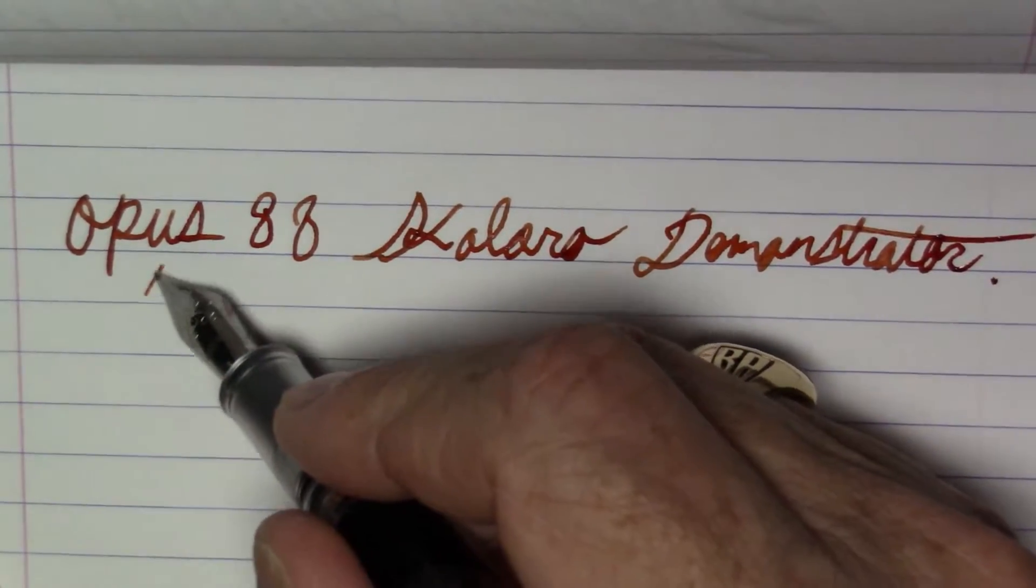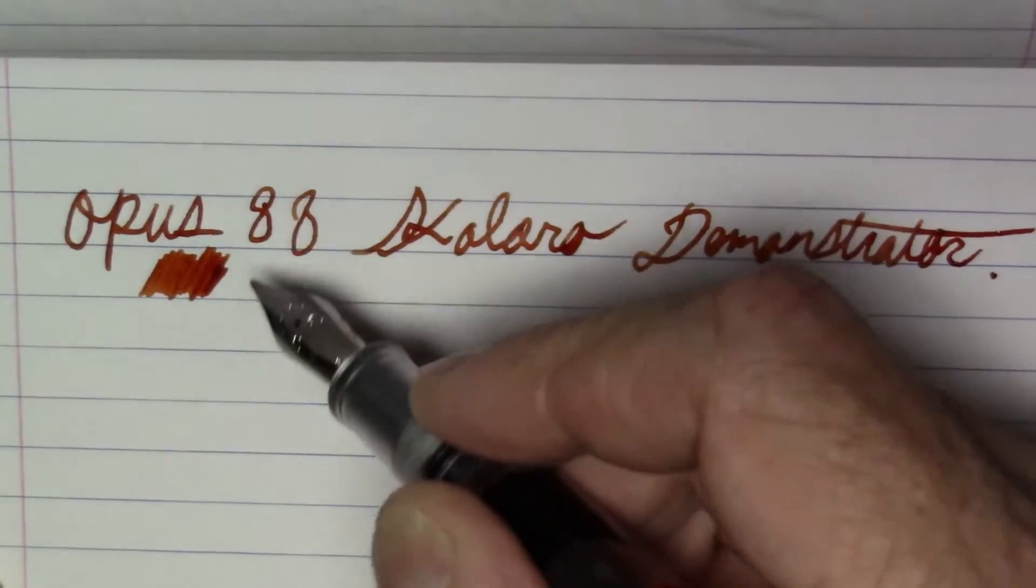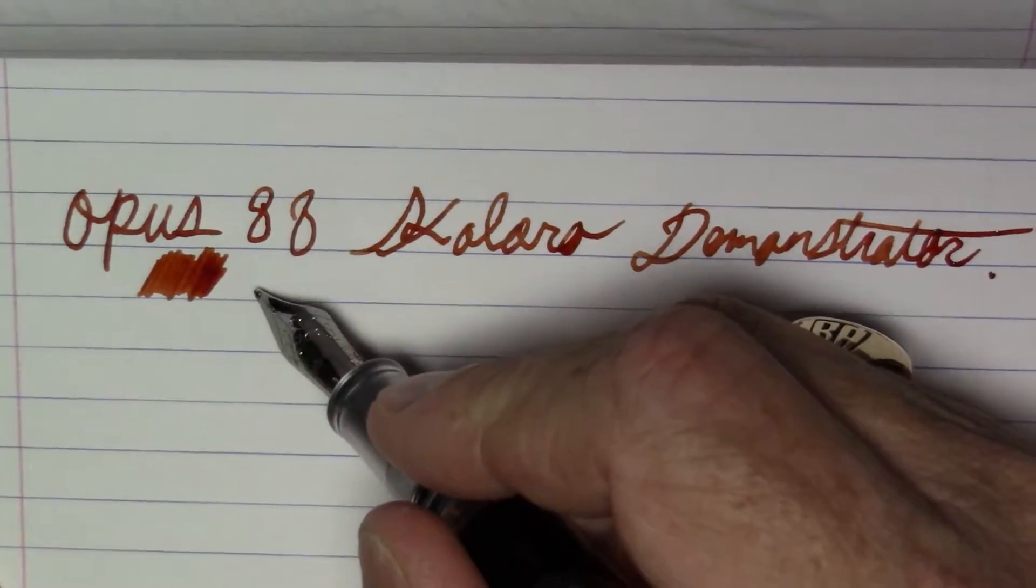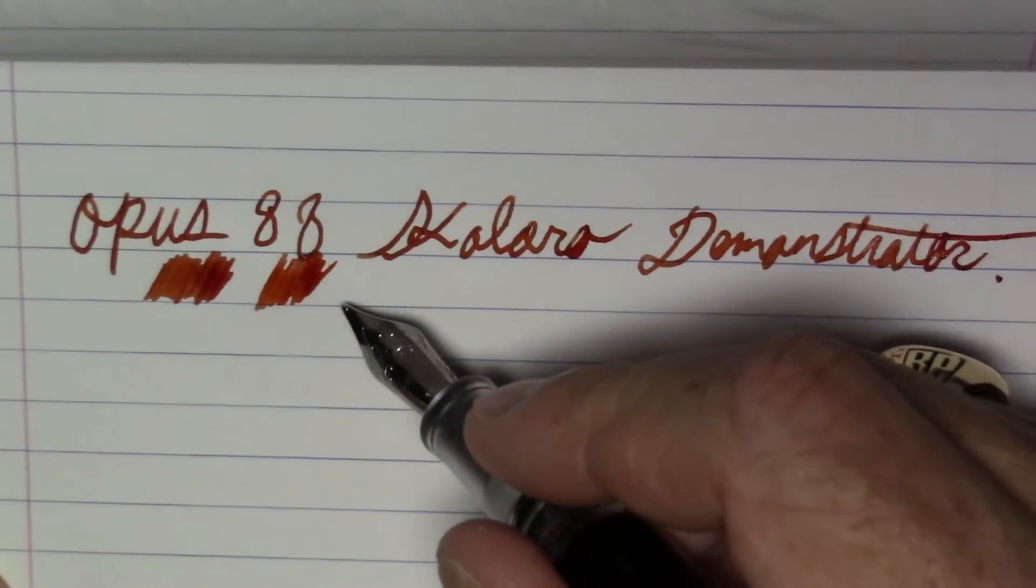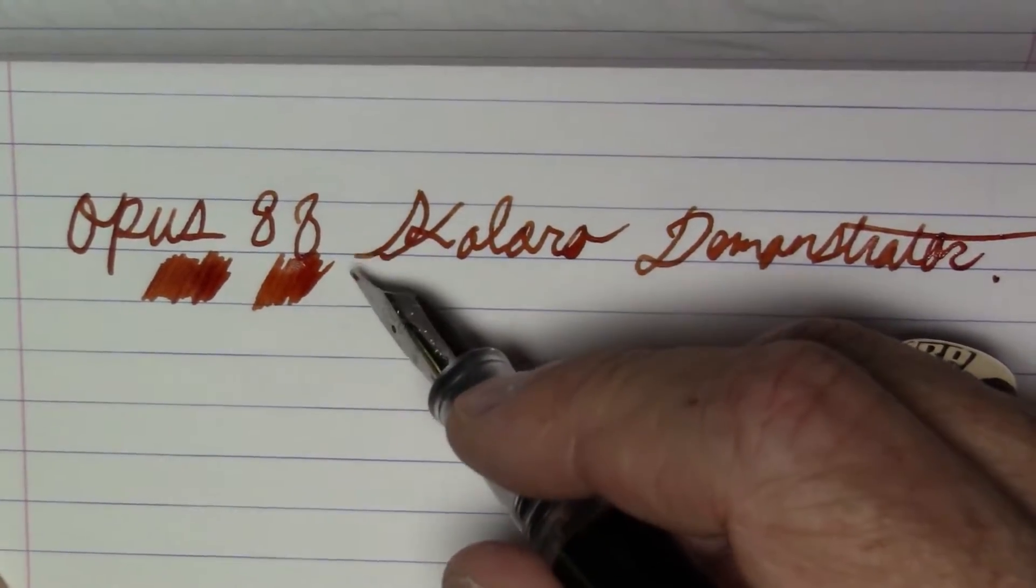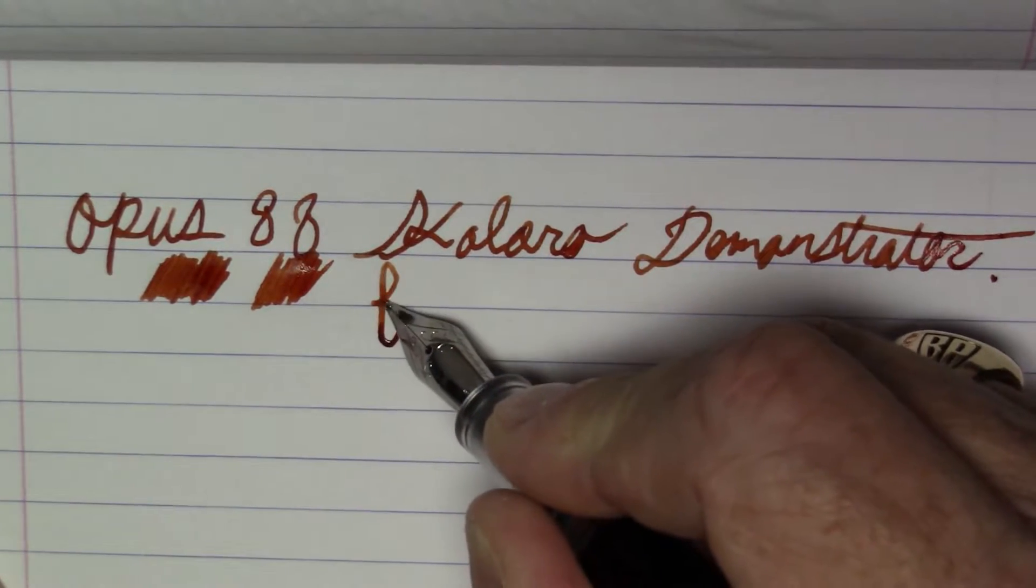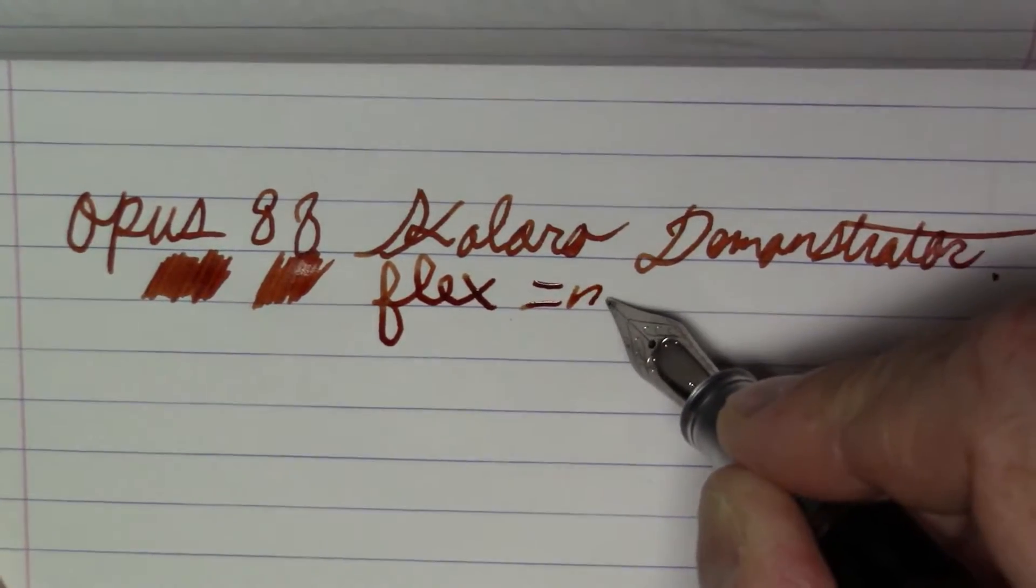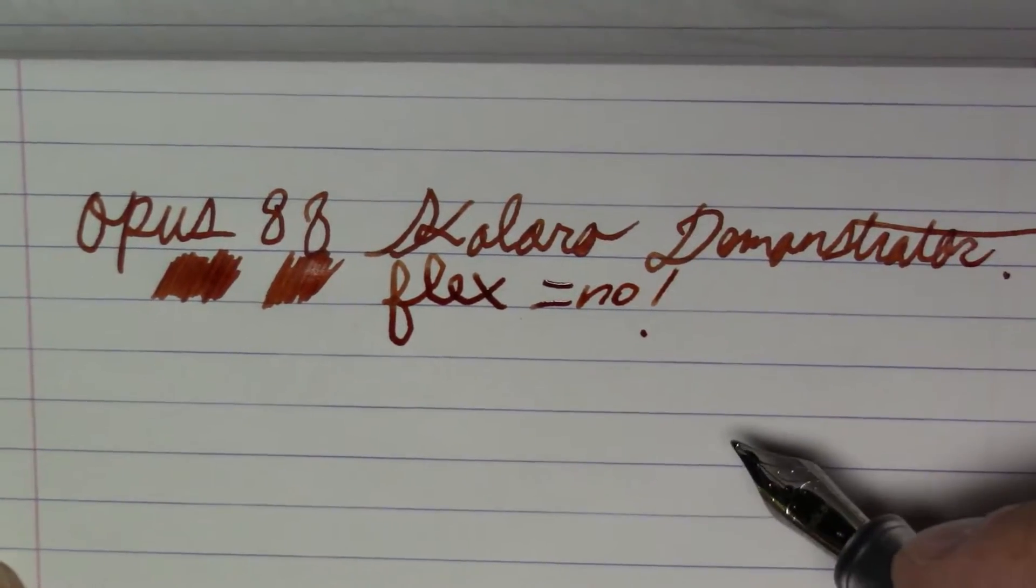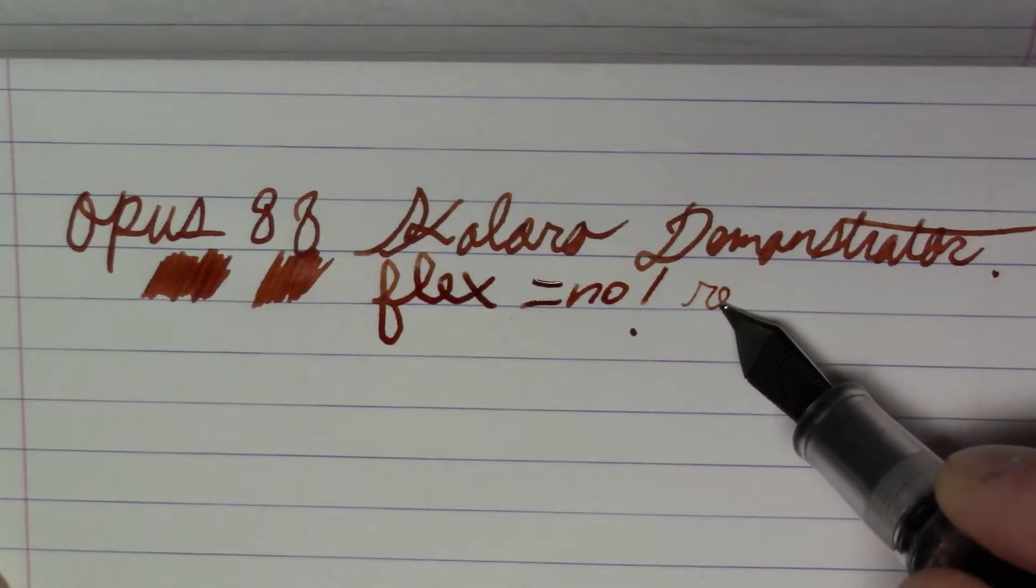This pen writes really well. It's the Jovo nib, as you would expect. It writes nice and wet and has a very nice broad line which really looks great. It's a stiff nib though, so there is not going to be flex or line variation here at all.